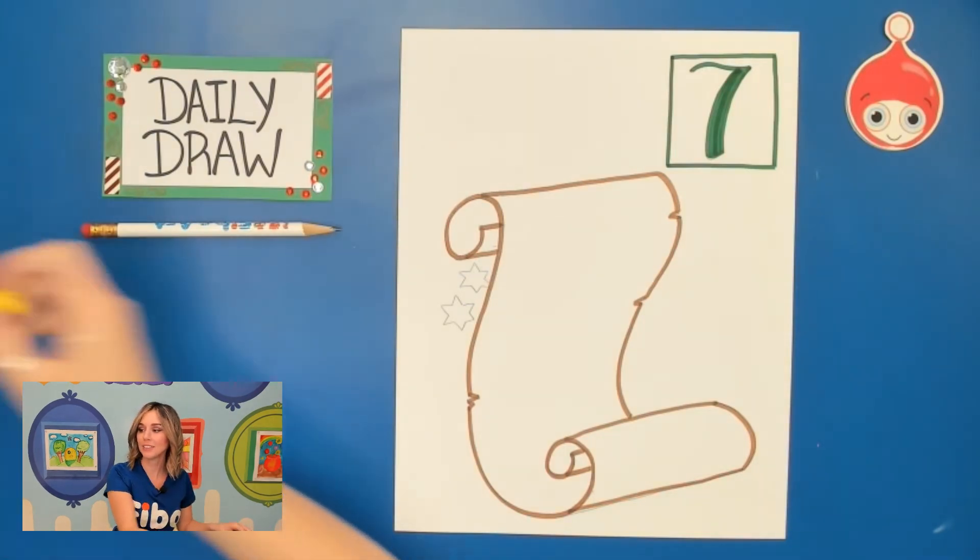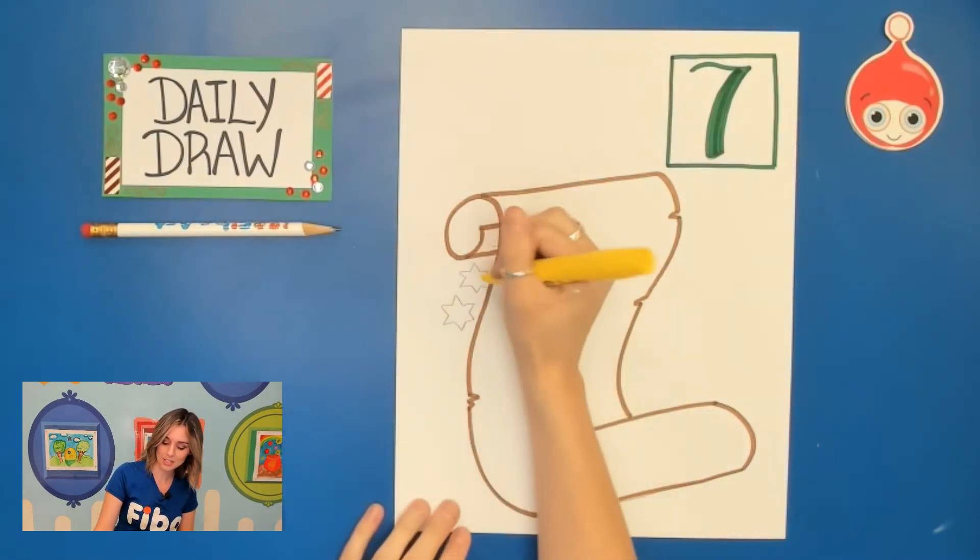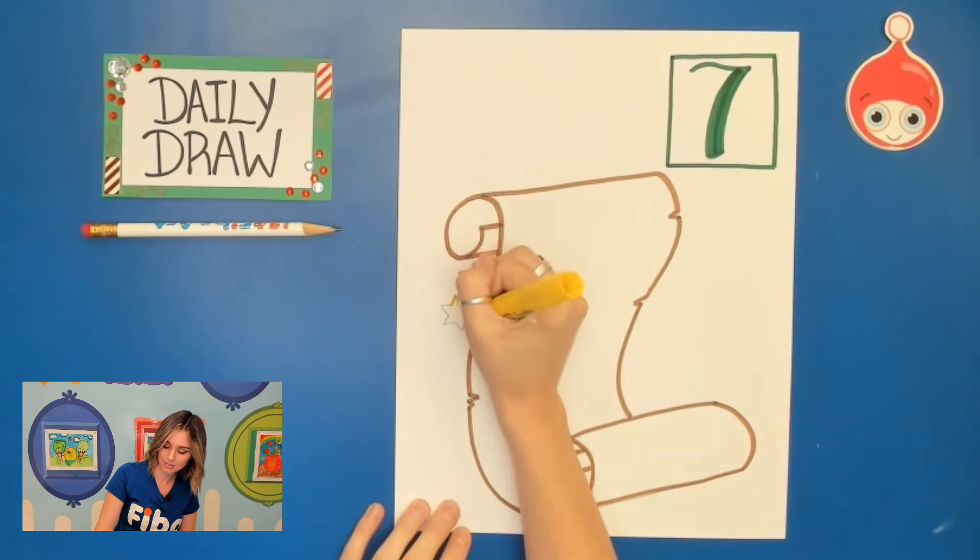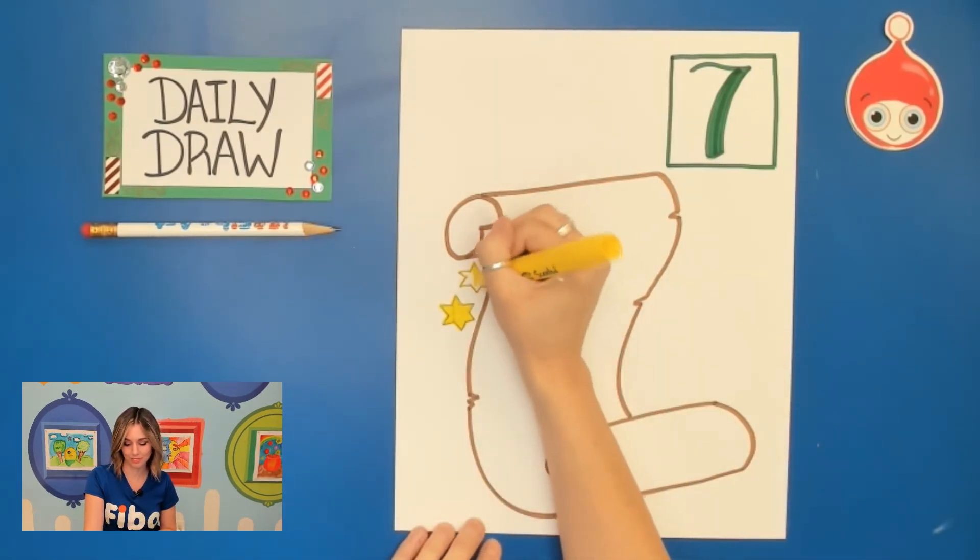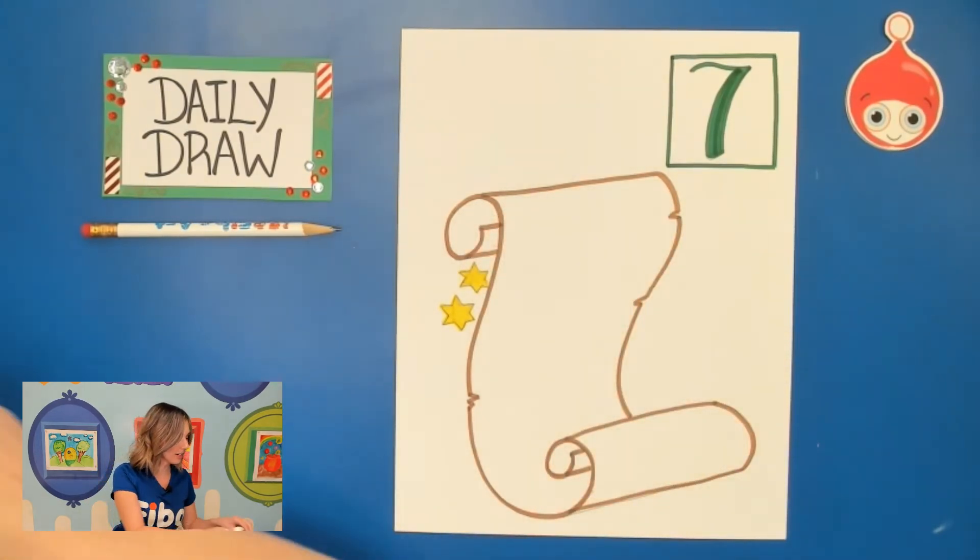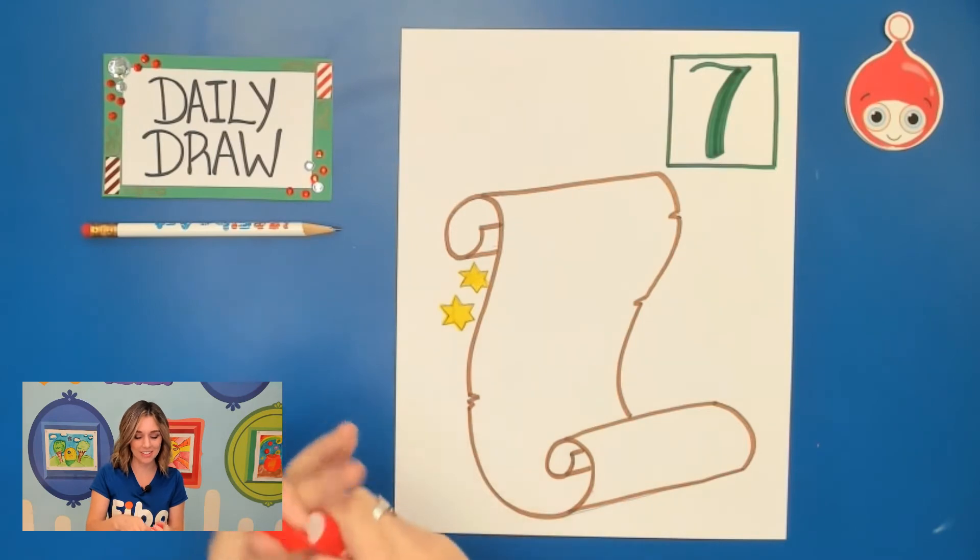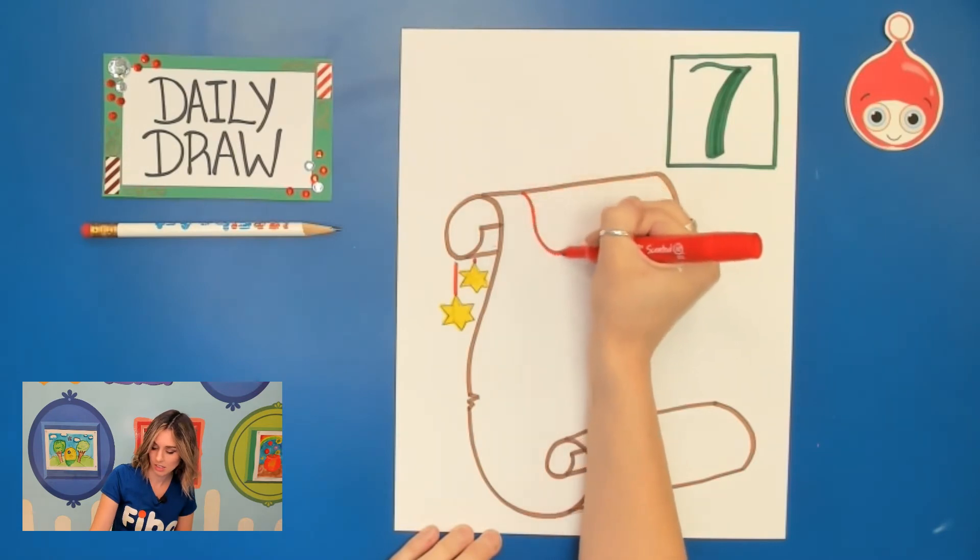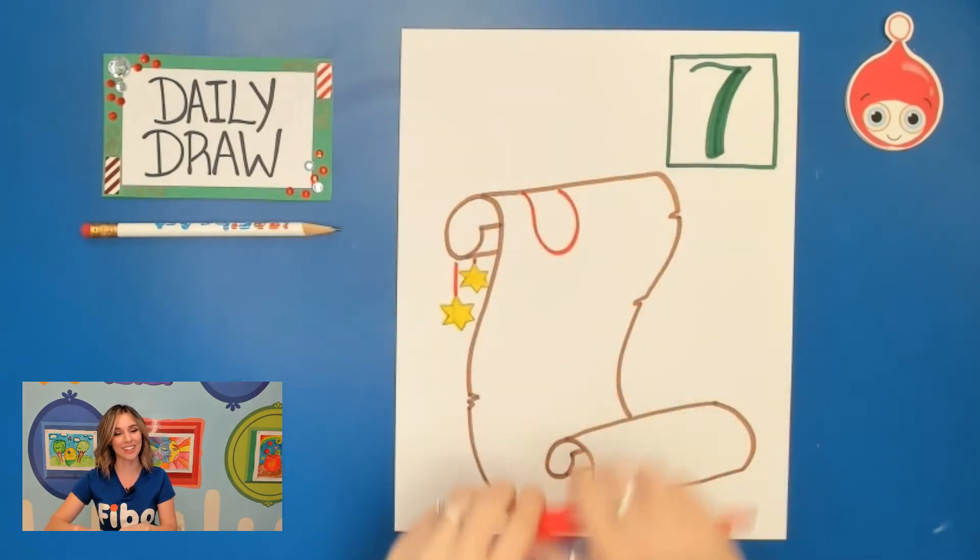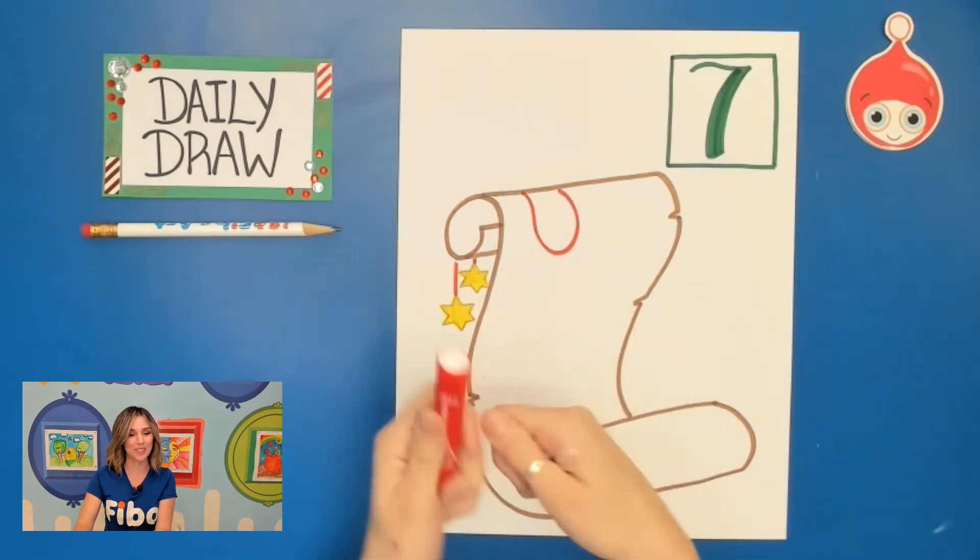I'm going to take my yellow and just go over my stars. And I'm also going to fill them in. I also want part of that string. So I'm going to be taking my red and I'm going to add those lines. So that way I know that that's where he ties that list. Rolls it up and then ties it.